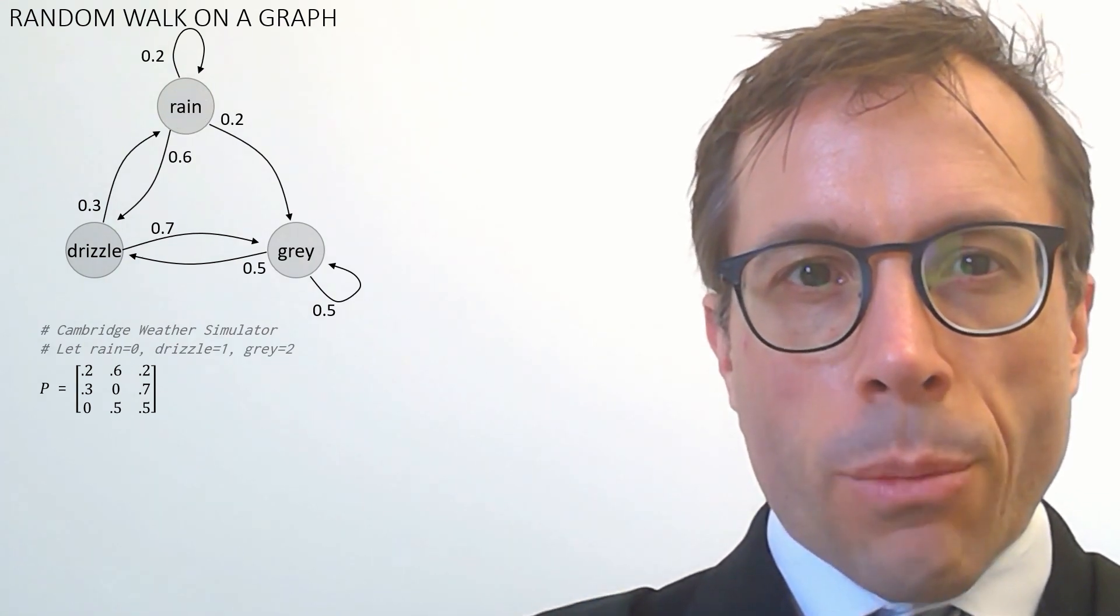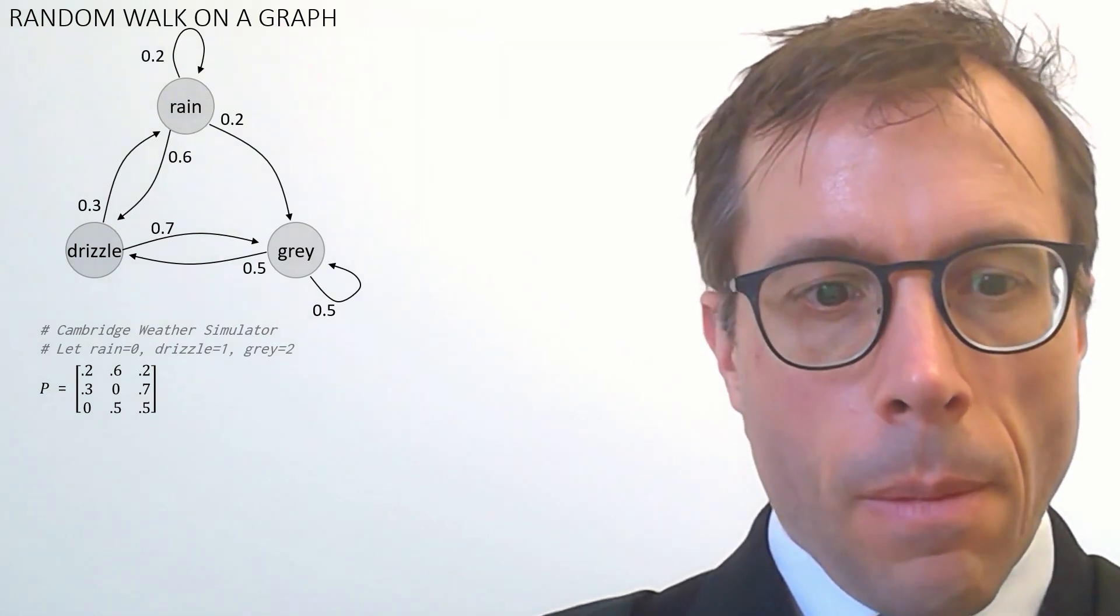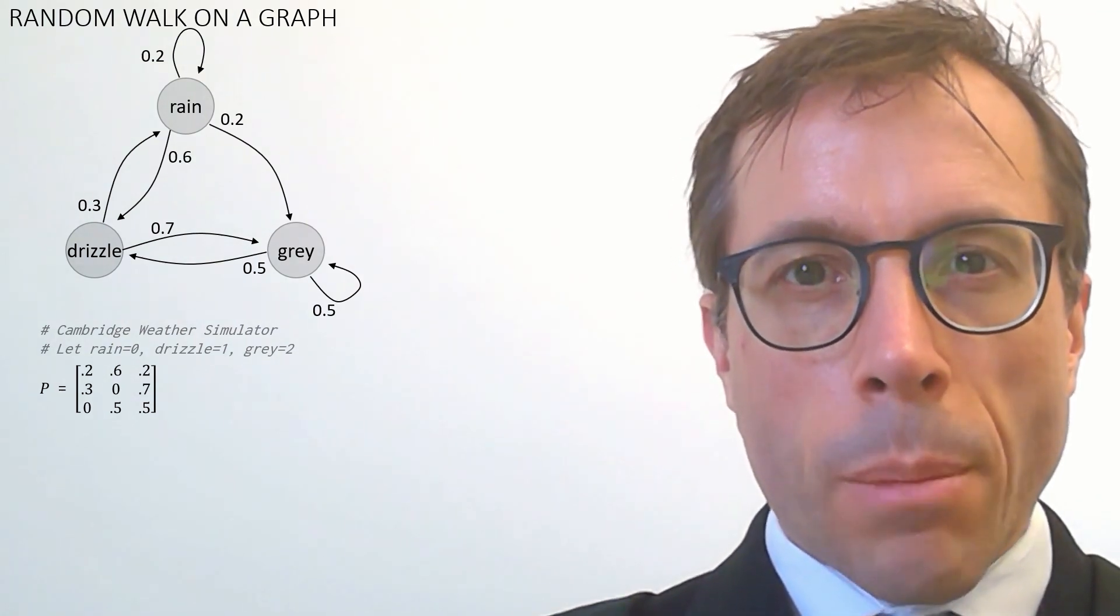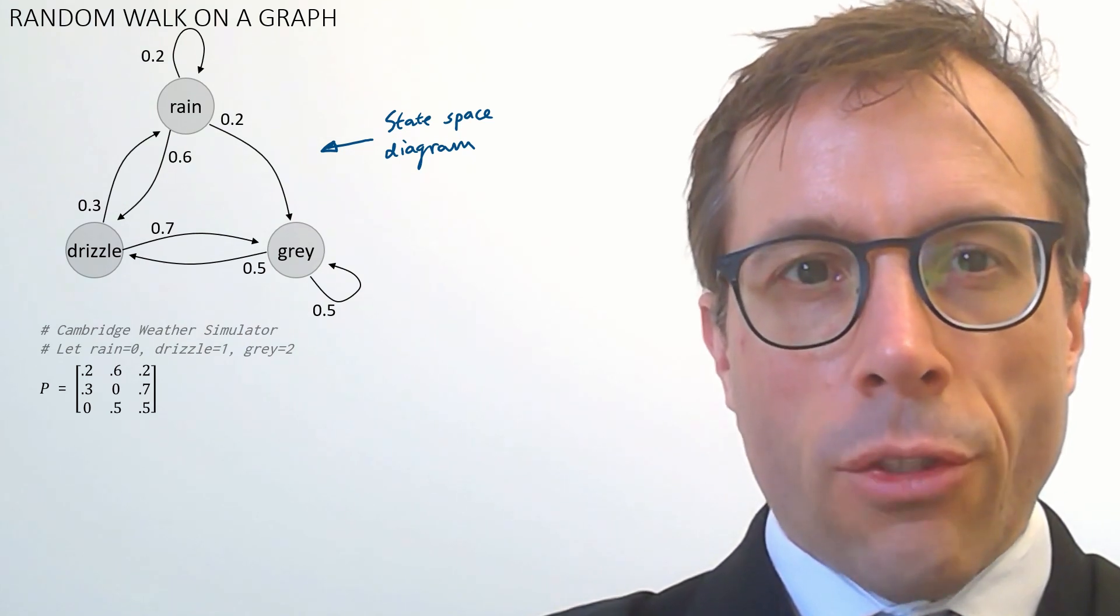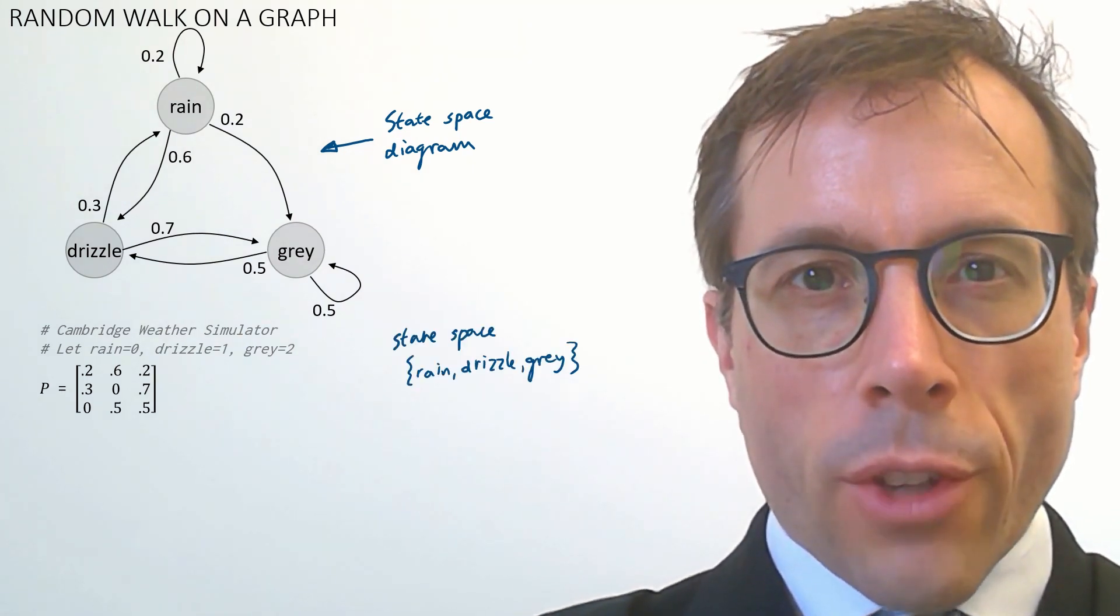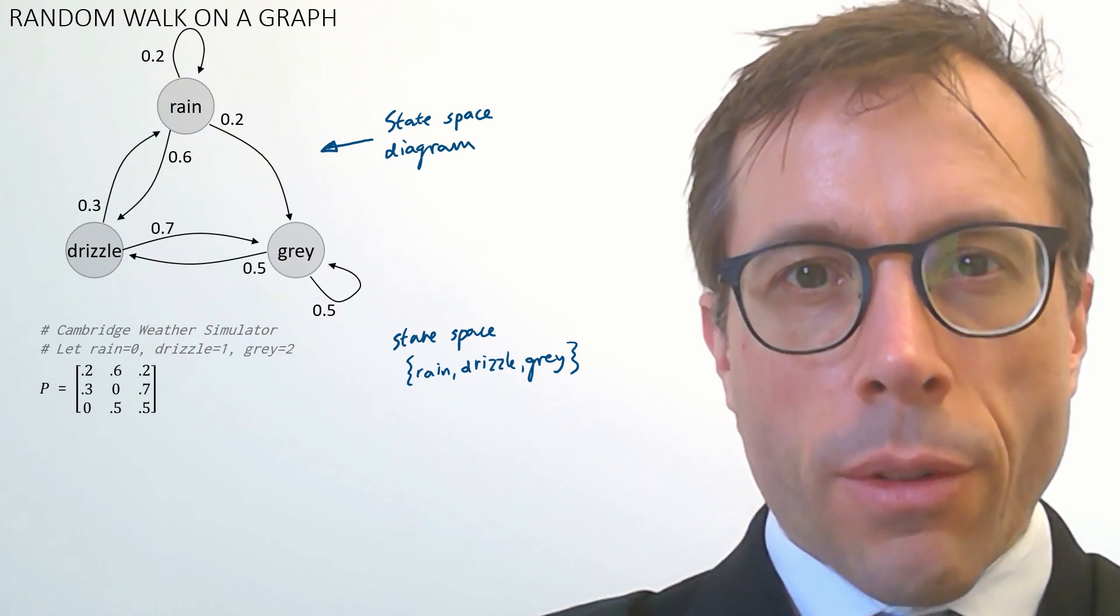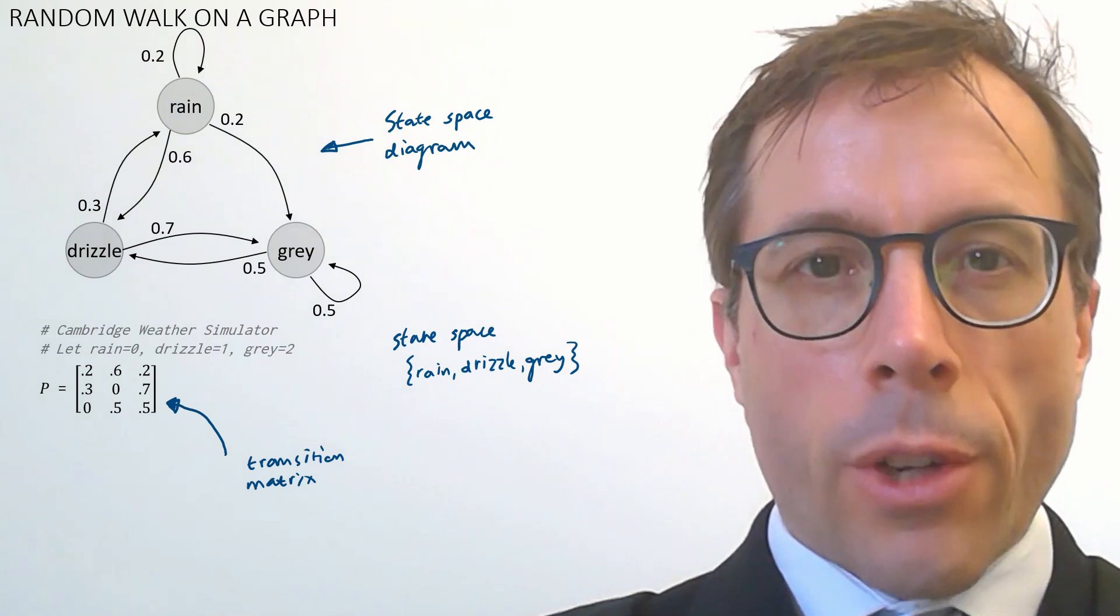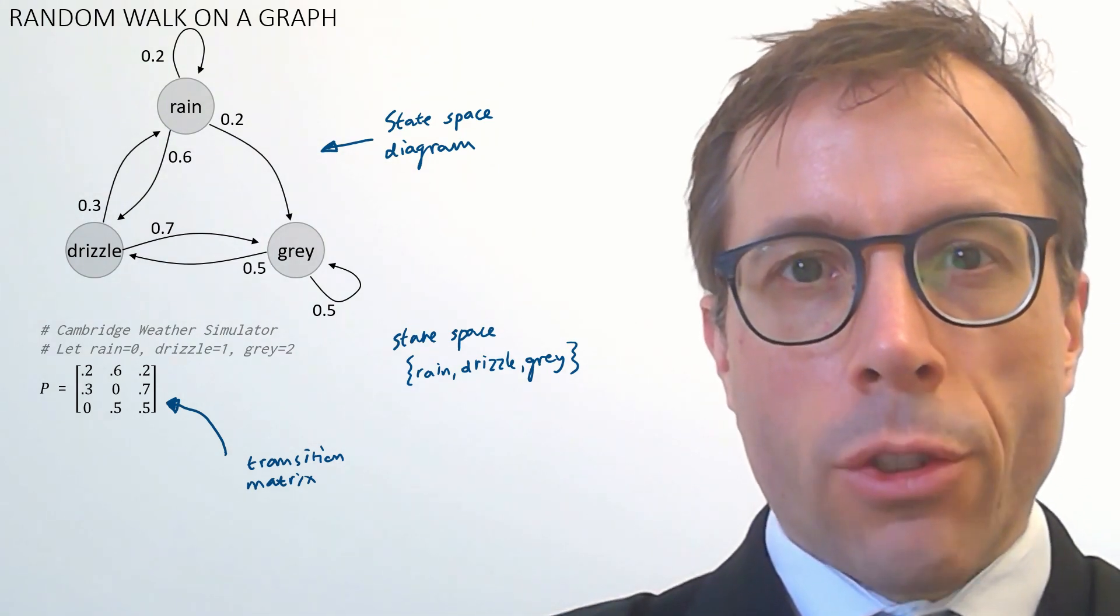Let's just introduce some terminology. This diagram at the top, showing all the states and the transitions between them, this is called the state space diagram. We refer to the set of all possible states as the state space of the Markov chain. And this matrix P, with all the transition probabilities, is called the transition matrix.